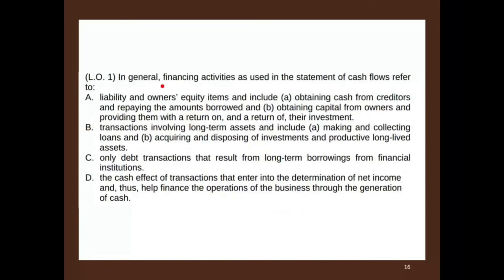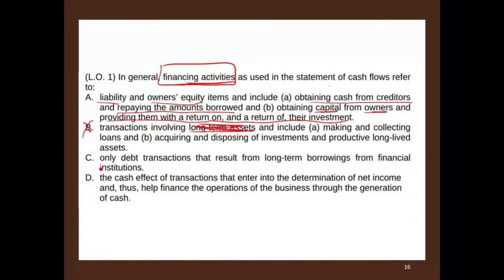In general, financing activities as used in the statement of cash flow refers to what? Option A: liability and equity items that include obtaining cash from creditors, repaying amounts borrowed, obtaining capital from owners, and providing them with a return on their investments. That looks like a really strong candidate — borrowing and paying back loans, plus getting money from stockholders and paying dividends. Options B (long-term assets — that's investing), C (only debt — financing also involves equity), and D (net income — that's operating) are all out. The answer is A.